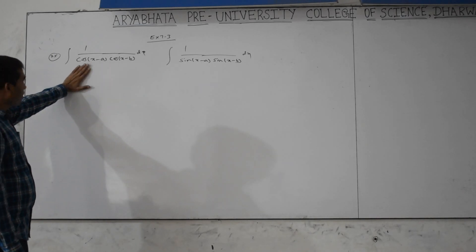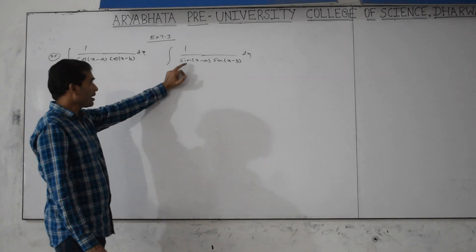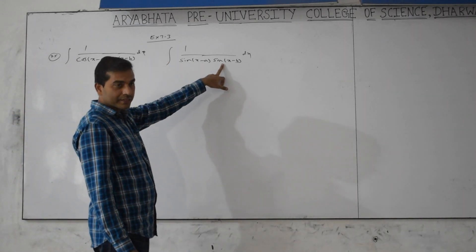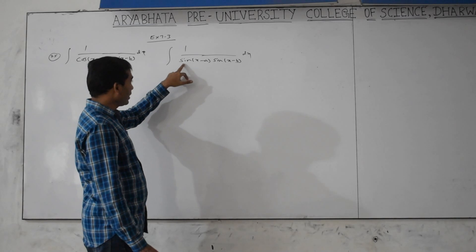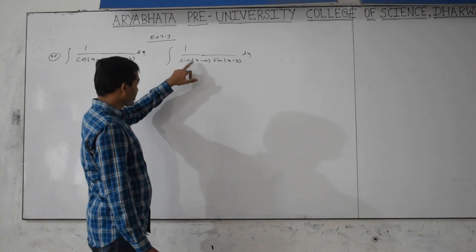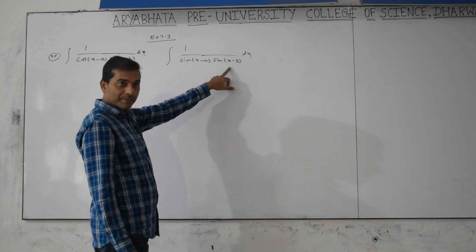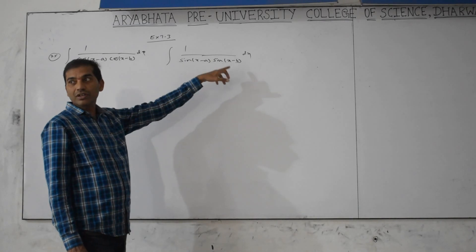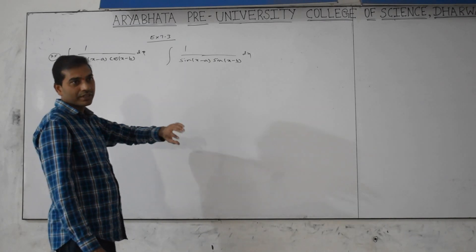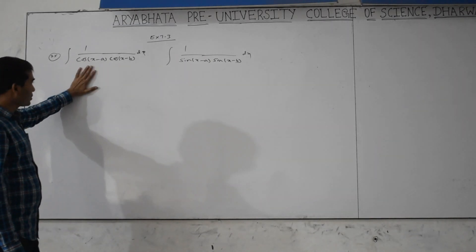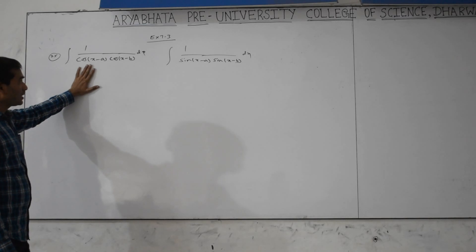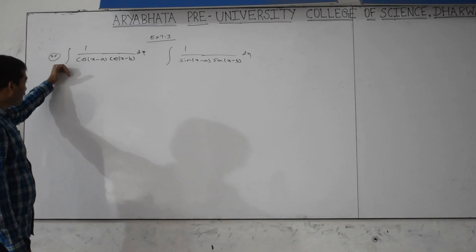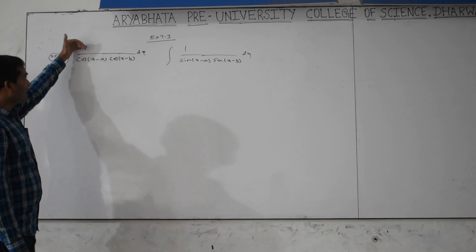This type of model involves integration of 1 by sin(x minus a) sin(x minus b) dx, or integration of 1 by cos(x minus a) into sin(x minus b) dx, or sin(x minus a) into cos(x minus b) dx. For this type of problem, the way of finding the integration is: we should multiply numerator and denominator by a constant.